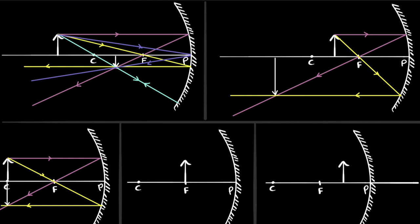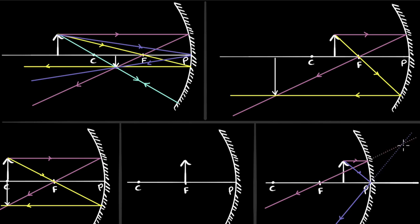What if the object is between F and P? The first ray I will draw parallel to the principal axis goes through the focus. Now for the second ray — can I draw it through the focus? No, it will not hit the mirror, so I can't do that. I will not draw through the center of curvature either. This time I'll draw the ray through the pole, making sure this angle is the same as this angle. Notice this time the two rays are not going to meet at all — they are diverging away from each other. If I were to extend them behind the mirror, it appears that the two rays are coming from a point behind the mirror.